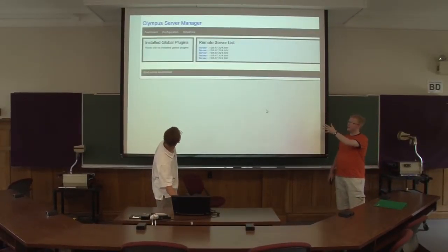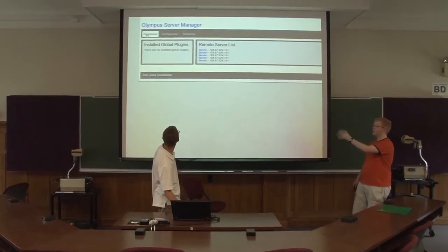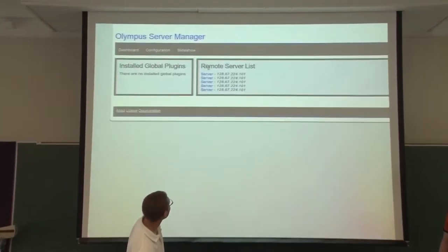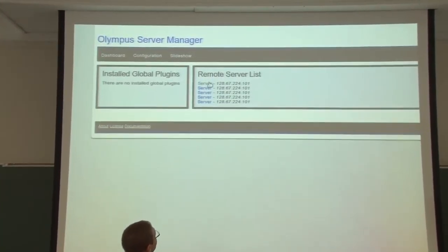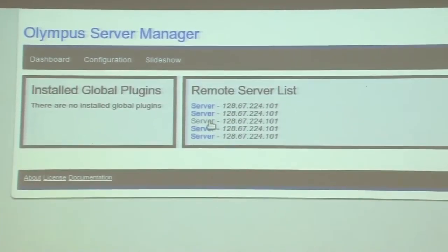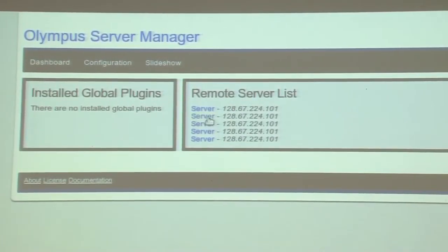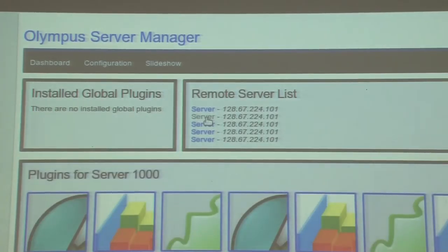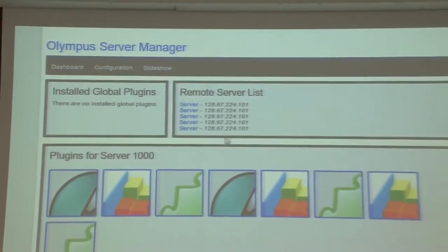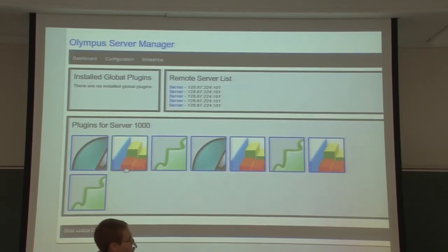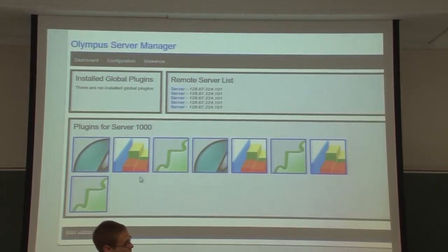This is the basic dashboard that you get right now when you log on to a default construction of the Olympus server. To the top right here, you'll see your remote servers. This is just a sample, so they're all the same. And everything is loaded here with Ajax.